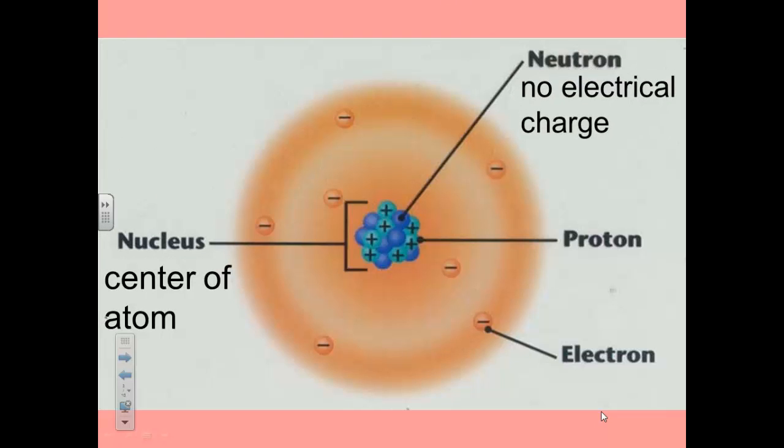Again, the nucleus is the center of the atom. It contains the neutrons and protons. The neutrons have no electrical charge, and the protons have a positive charge. Electrons may join or leave atoms and may be shared between atoms and have a negative charge.